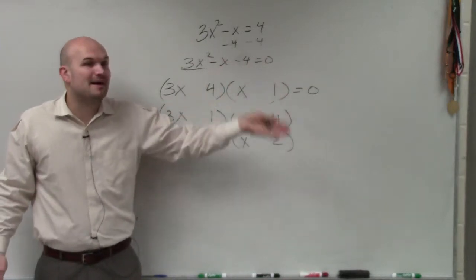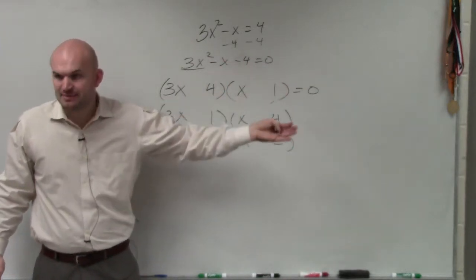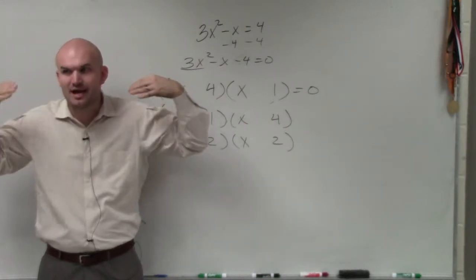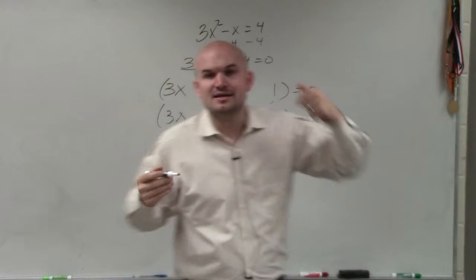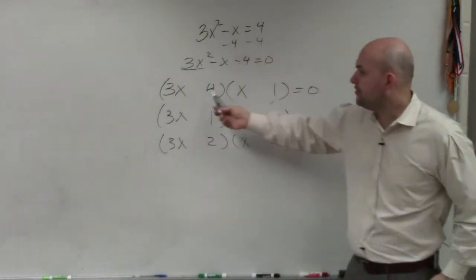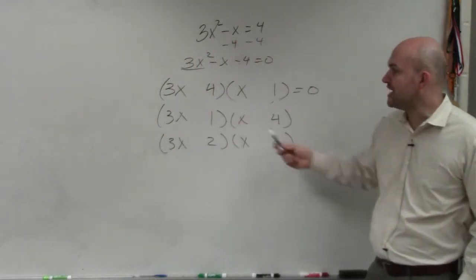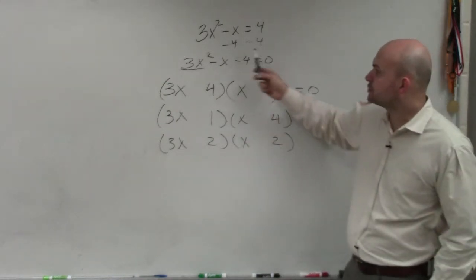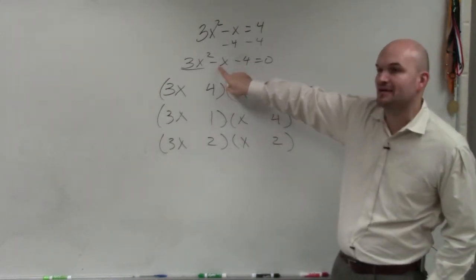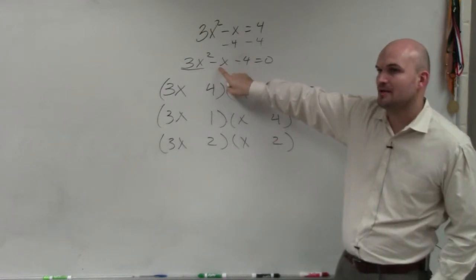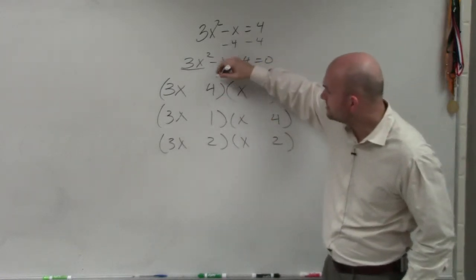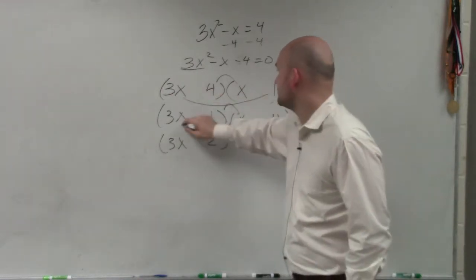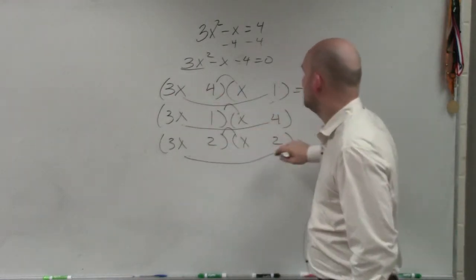But remember, it's a negative. So one of them has to be positive. One of them has to be negative. So when you're using this method, you're doing a lot of thinking in your head and you're trying to think ahead, saying, all right, we know that the first terms and the last terms are the same, but which one is positive, which one is negative, and which one is correct that's going to add to give me a negative x. So what I do is now I look at multiplying my middle terms and my outer terms.